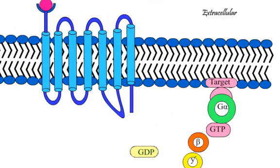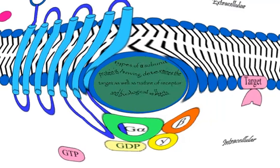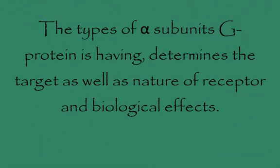The activity of GTPase of the alpha subunit leads to hydrolysis of GTP to GDP. The alpha, beta, and gamma subunits reunite and GPCR becomes inactivated.